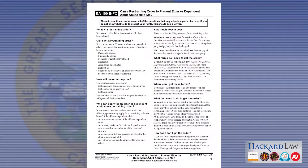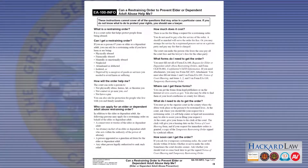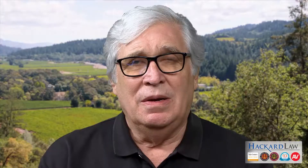In California, a great resource that includes most of this information is EA-100 Info, titled 'Can a Restraining Order to Prevent Elder or Dependent Adult Abuse Help Me?' Most restraining order and Temporary Restraining Order forms are mandatory Judicial Council forms, which means you have to use the specific forms created by the California State Judiciary. All Judicial Council forms, mandatory or optional, can be found at www.courts.ca.gov/forms.htm.